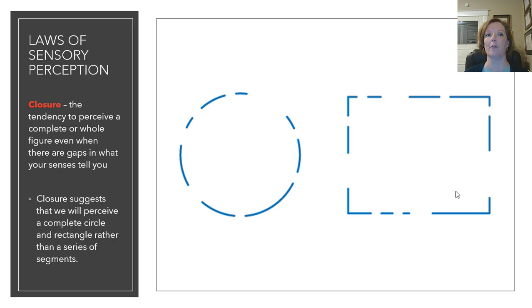So, the first Gestalt Law of Sensory Perception that we talk about is closure. Now, you can look at this one of two ways. You can either see the images in front of you as a circle and a slightly squarish rectangle, or you could see them as series of lines configured in a specific way. We tend to see them as geometric shapes rather than just random lines. Why? Because our brains don't like randomness. Our brains try to put things together to make them make sense.